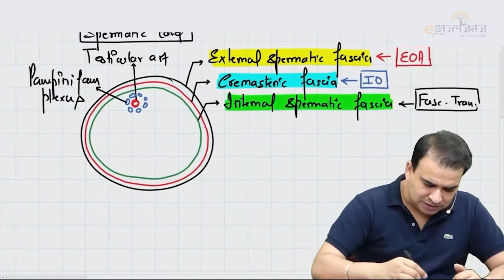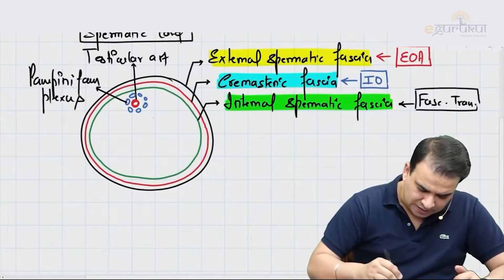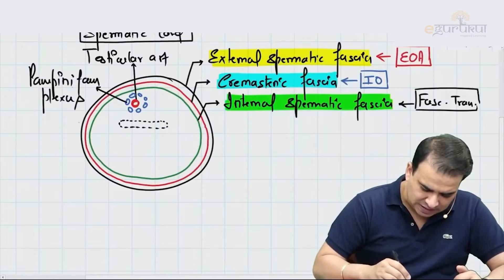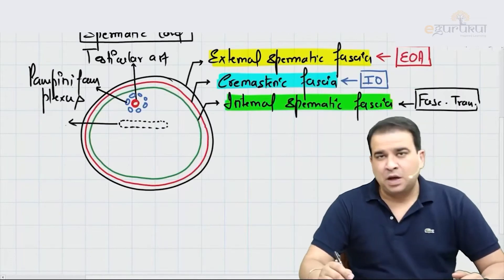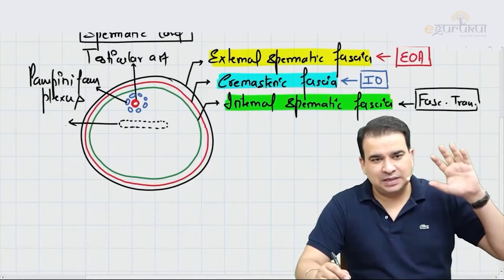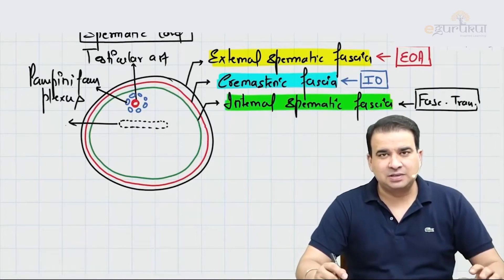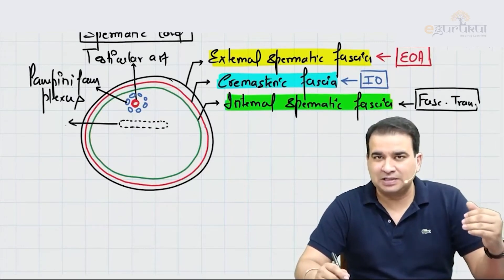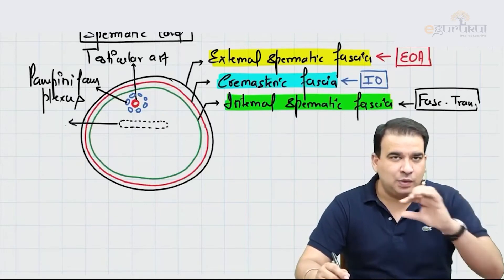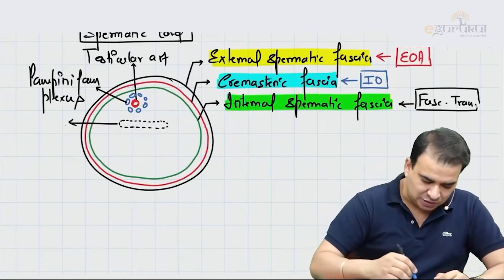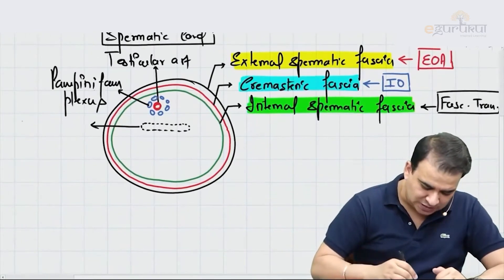You will also appreciate the remnant of the processus vaginalis inside this. When the testis descends, it pushes the processus vaginalis — you know the layer outside the testis is the tunica vaginalis — so the remnant will be seen in the spermatic cord and that remnant is called the processus vaginalis.